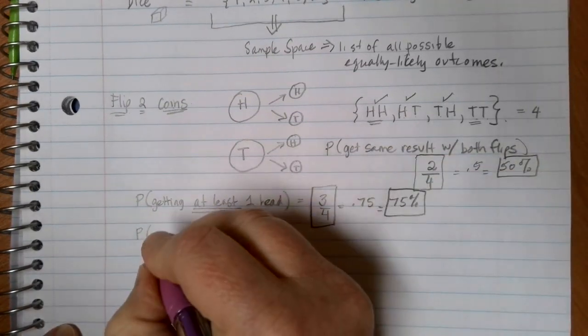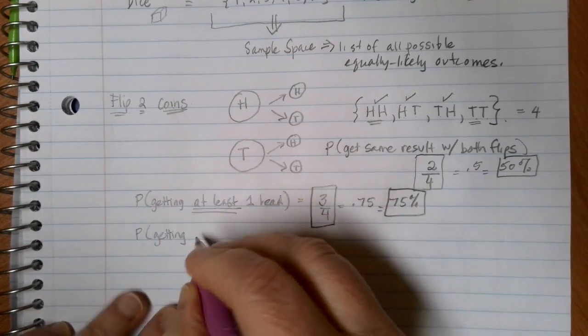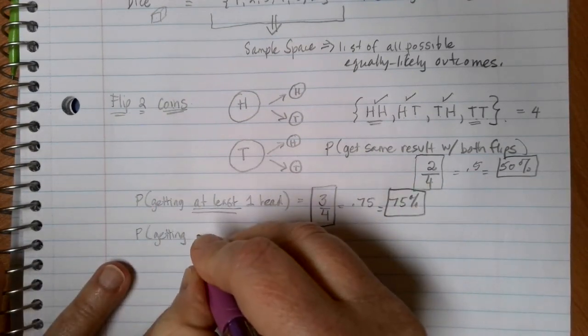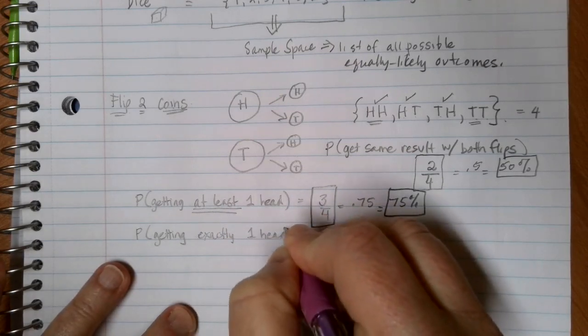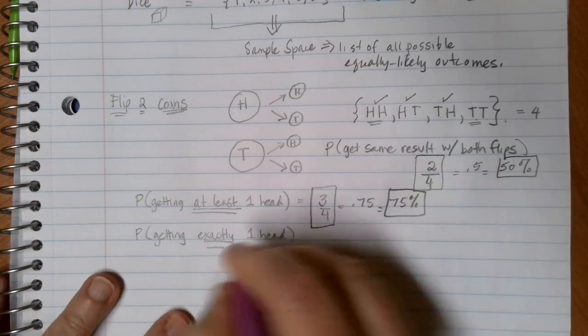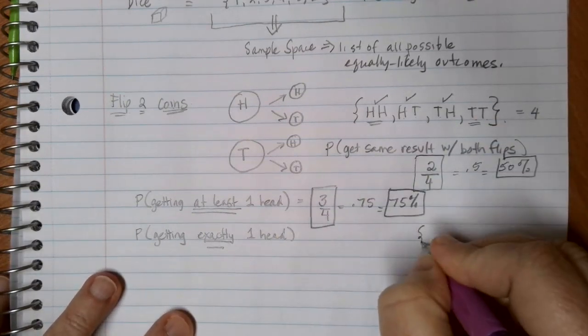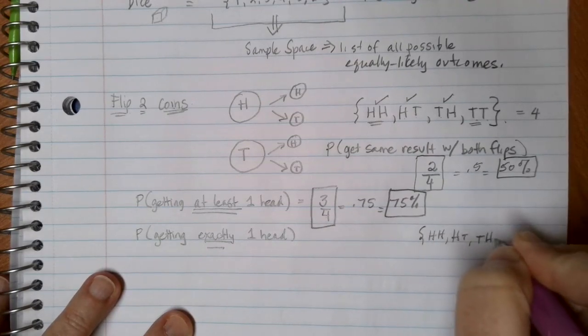Now, just in terms of some vocabulary here, let's suppose that I'm interested in getting exactly one head in my flip. I still have my four options. I'll rewrite them since we're getting a little bit messy there. Heads heads, heads tails, tails heads, and tails tails.